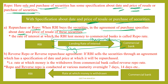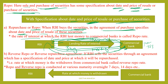In a repo, if a date is fixed, the bank holds the securities and RBI holds the securities. The commercial bank is involved. The rate of interest at which RBI lends money to commercial banks is specified. When it comes to RBI, this is the repo rate.